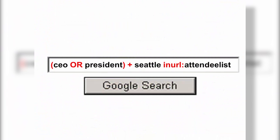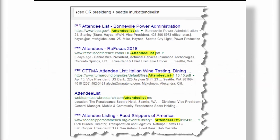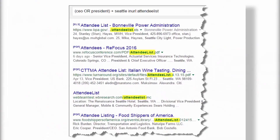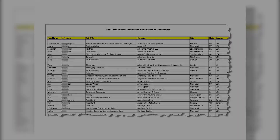Here's another example. Conferences and events oftentimes have attendee lists, and they'll post those lists online. So Google, find me a web page or document where the content includes the word 'CEO' or the word 'president' — I'm using OR because I want this or that — plus the word 'Seattle,' and inurl:attendee list. A bunch of web pages appear, all of them with the phrase 'attendee list' inside the web address. I can click on any of them and get the full attendee list to a conference — this one held in San Francisco, but with attendees including CEOs and presidents from Seattle.